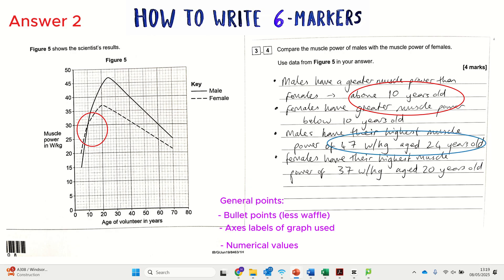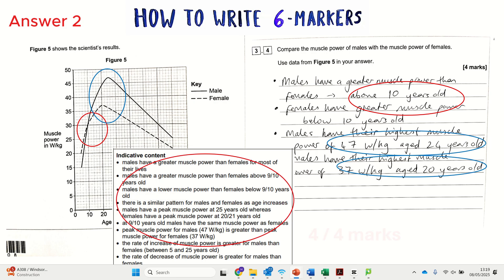For most of the graph the solid line is higher than the dashed line apart from that first section between ages of about 5 and 10. Conversely, females have greater muscle power below 10 years old. Sounds like a really obvious point but you get marks for obvious points when you're just describing a graph. We could talk about the peak of the graph and say males have their highest muscle power at 47 watts per kilogram age 24 years old. Don't worry about what those units mean, just read the graph. Conversely, females have their highest muscle power 37 at age 20 years old.